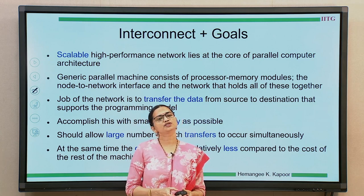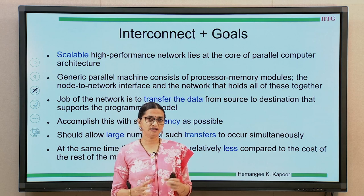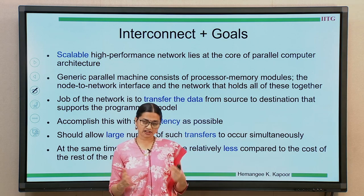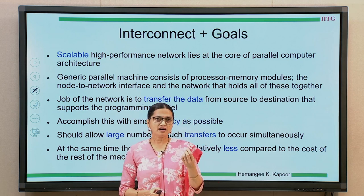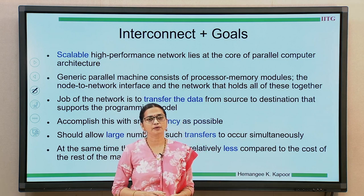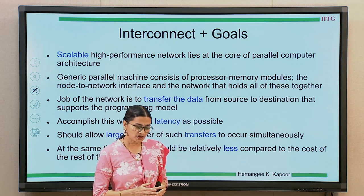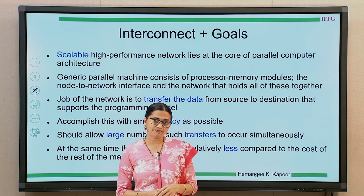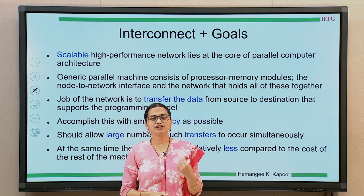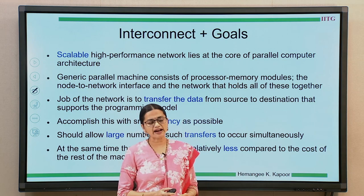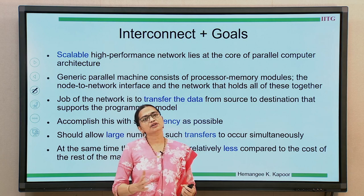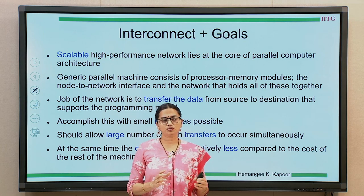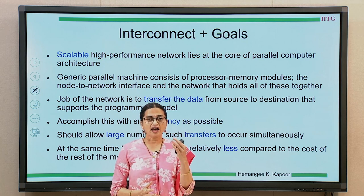The network we are talking about has to be scalable and high performance. Scalability means that you should be able to connect more and more processing nodes to it and still the network should give good performance to your system. So we need a scalable high-performance network. Its job is to transfer data from one processing node or memory module to another — from source to destination. It has to do this at very high speed, with low latency and good bandwidth. We need low latency because the processing node is waiting for the transfer or receiving of data, so we should not keep the processors waiting.